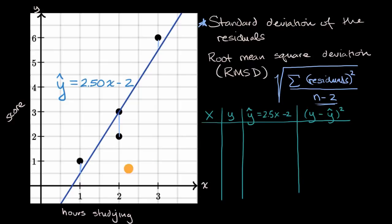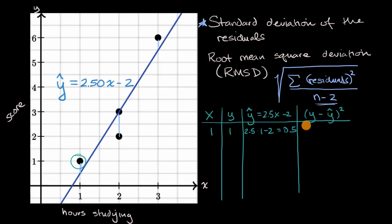First, let's do the data point (1, 1). When x equals one, our estimate from the regression line is 2.5 times one minus two, which equals 0.5. So our residual squared is (1 minus 0.5)², which is 0.5 squared, which equals 0.25.